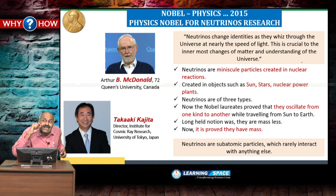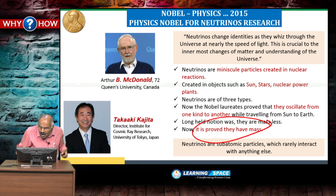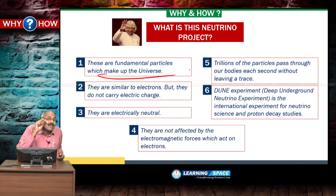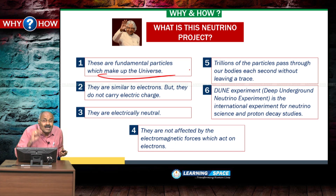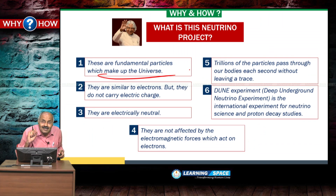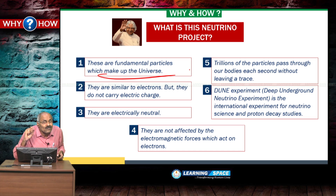Two scientists received the Nobel Prize in 2015 because they proved that neutrinos have mass. Neutrinos are fundamental particles that make up the universe. Two important points: neutrinos are electrically neutral, and neutrinos have mass — which was proved recently, forming the basis of the Nobel Prize in Physics. This neutrino observatory is the brainchild of APJ Abdul Kalam and is expected to come up in Theni district of Tamil Nadu.